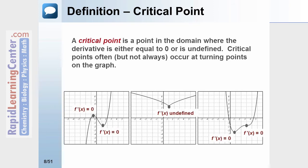In the first graph, it has two critical points and they both occur at places where the derivative is 0. The second graph has a critical point where the derivative is undefined. The third graph has two critical points, both occurring where the derivative is 0, but only one of those critical points is an actual turning point on the graph.